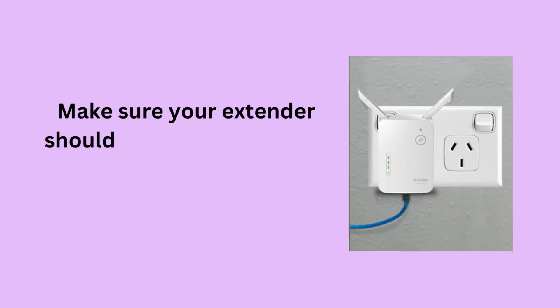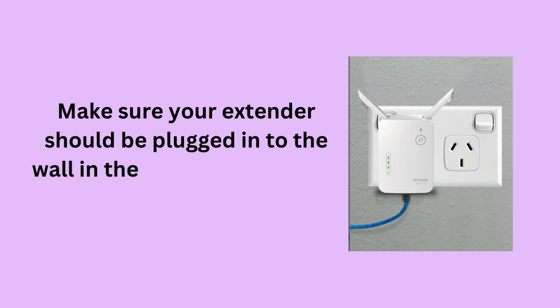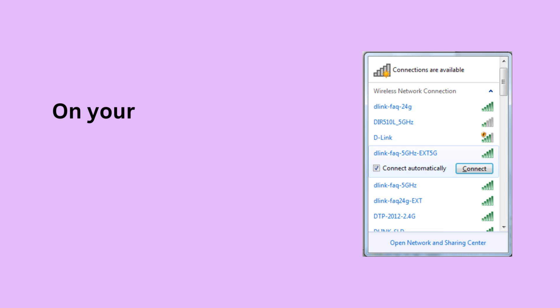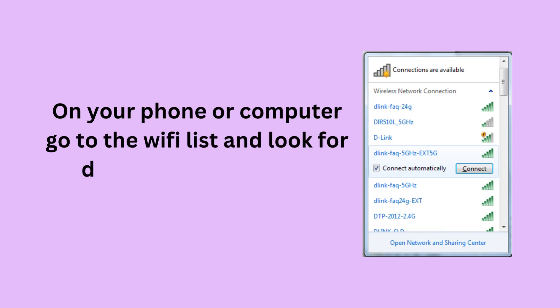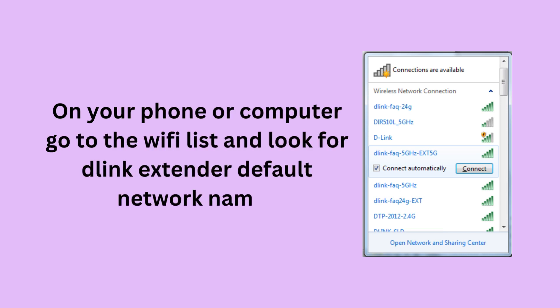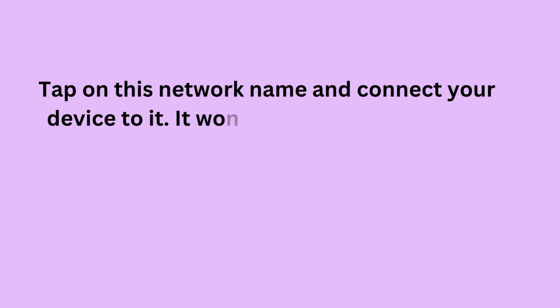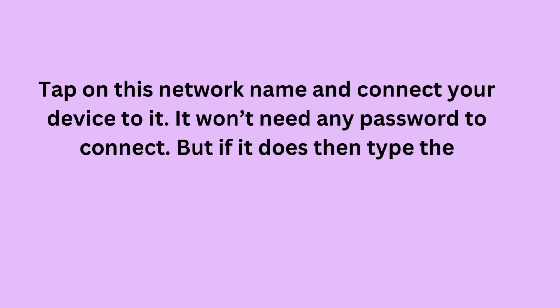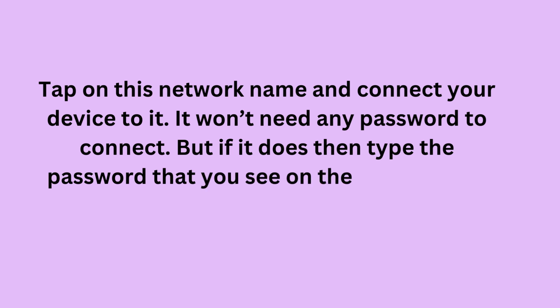Make sure your extender should be plugged into the wall in the same room as your router. On your phone or computer, go to the Wi-Fi list and look for the D-Link extender default network name. Tap on this network name and connect your device to it. It won't need any password to connect, but if it does, then type the password that you see on the back of your extender.